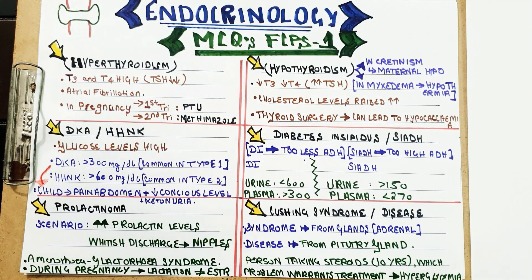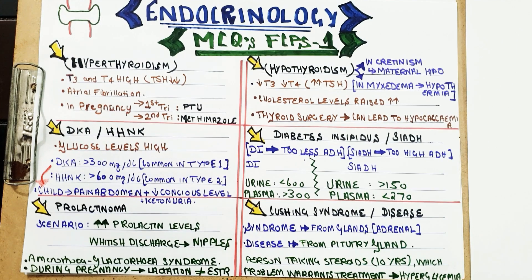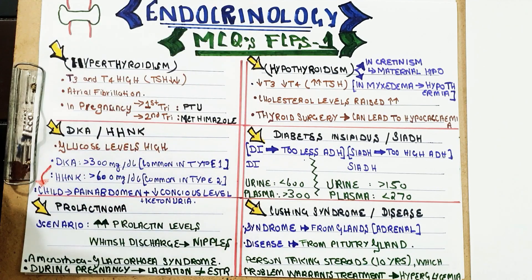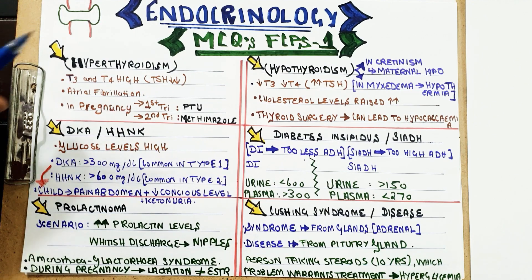In hypothyroidism, the T3 and T4 levels will be low but TSH levels will be high due to the absence of the negative feedback effect.